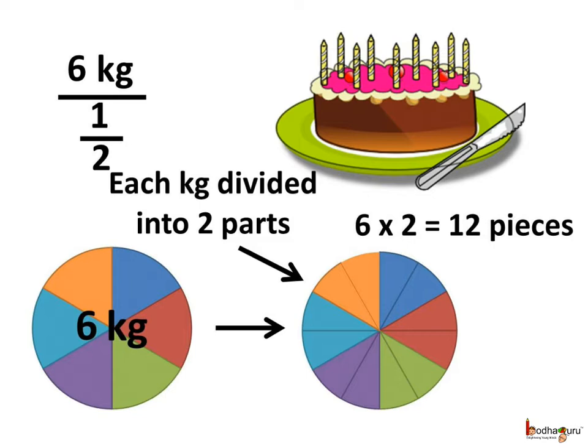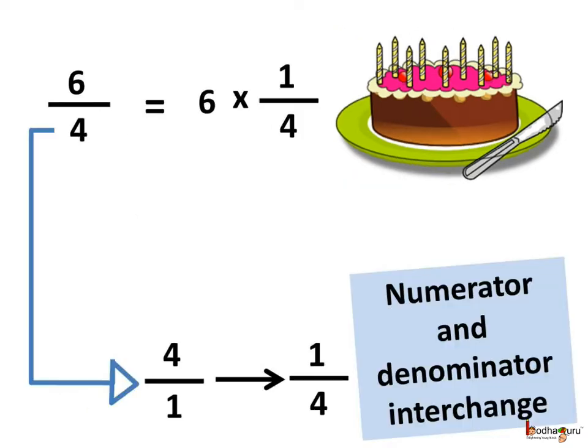Here, we are dividing 6 by half. But instead, what did we do? We multiplied 6 by 2 and got the result as 12 pieces.